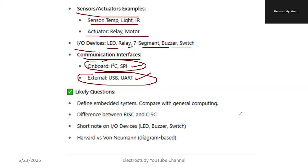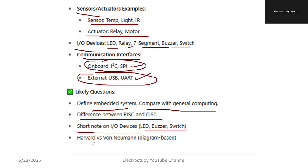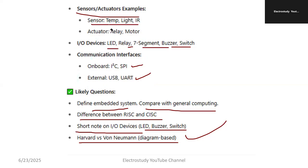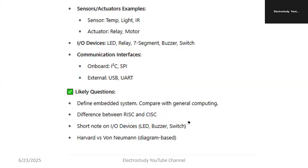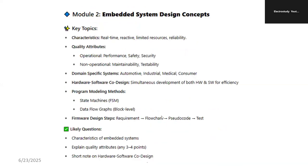Most probable questions are: define Embedded System; compare with General Computing — very, very important; difference between RISC and CISC processor — also one of the most probable university questions; short note on I/O devices; LED versus switches; Harvard versus Von Neumann — diagram based, try to remember the diagram. So you can score very good marks in Module 1. If you maintain good marks in Module 1, there is no problem as the toughness increases.